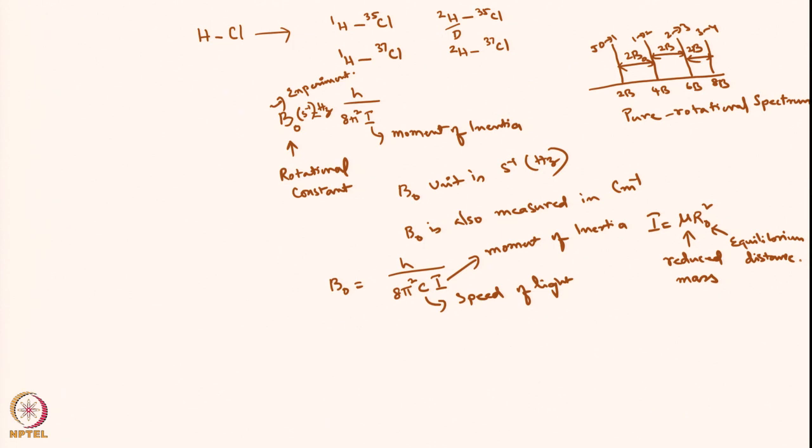So in experiment, it turns out after doing the experiment, in one experiment, what they have found that 1H 35Cl, the value of B0 was equal to 10.44 centimeter inverse. And similarly, value of 2H 35Cl, the value of B0 is equal to 5.39 centimeter inverse. So you see, when I substitute the hydrogen with deuterium, there is a drastic change in the value of the B0. This is what I call as isotope effect.